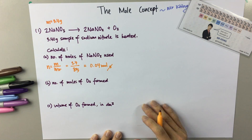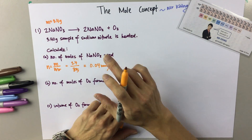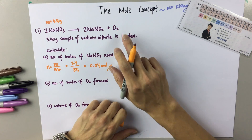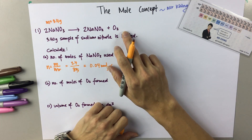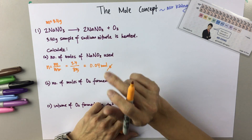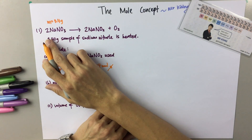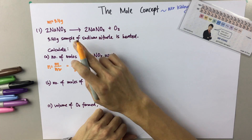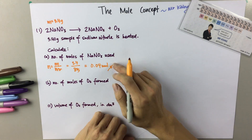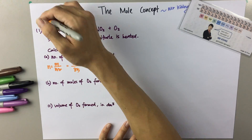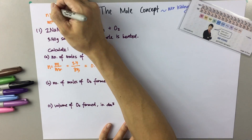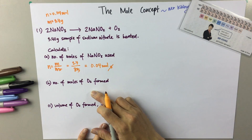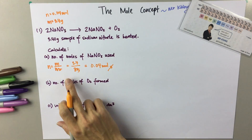Numbers of moles of oxygen formed. So whenever you have found the number of moles of one compound in the equation, you can basically look for the number of moles of other compounds based on the ratio. In this case, the equation has 2 NaNO₃ forming 2 NaNO₂ and 1 O₂. So based on the ratio, they ask you to look for the number of moles of oxygen formed, and you have the number of moles of NaNO₃ which is 0.04 moles. So what is the ratio of sodium nitrate to oxygen?